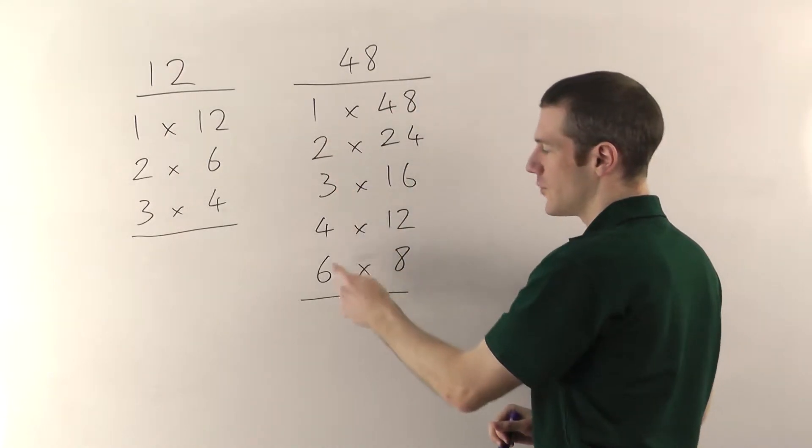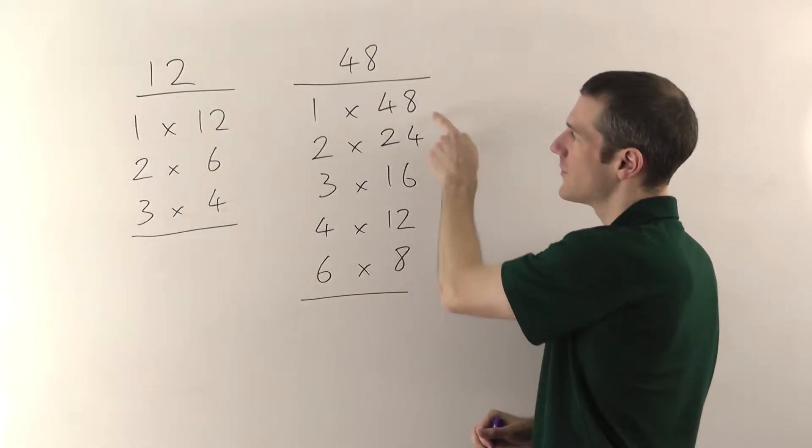The factors of 48 are 1, 2, 3, 4, 6, 8, 12, 16, 24, and 48.